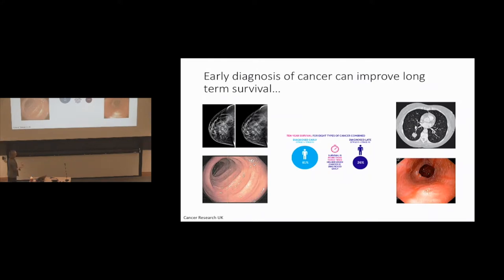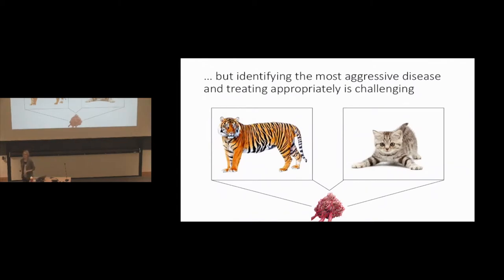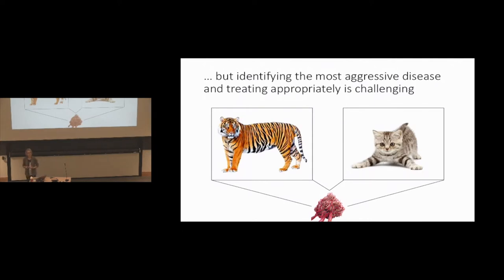These techniques — both the age-related ones and the high-risk ones — provide us with images which allow us to look for signs of cancer. But what they don't tell you is whether that cancer is going to go on to kill the patient or not. This is a major challenge: distinguishing the tigers from the pussycats in terms of cancer development — which of those early lesions are actually going to cause damage. So we'd ideally like not just a technique to detect early cancer, but also to work out which is the most aggressive disease and then treat appropriately. The current paradigm of treating all those lesions leads to real over-treatment problems.